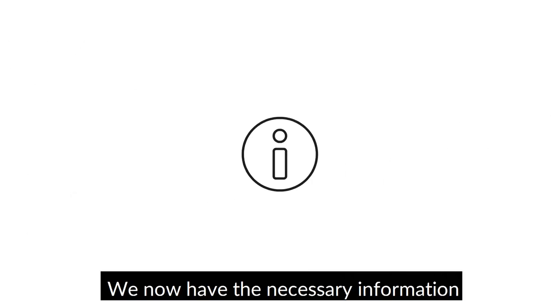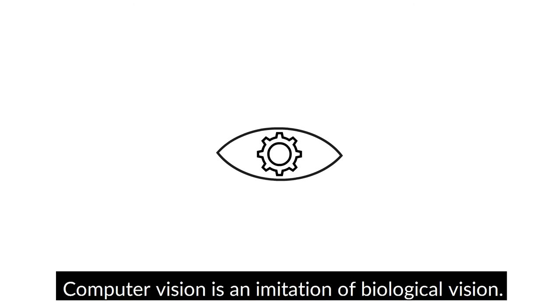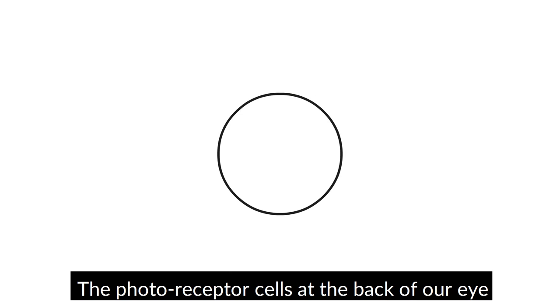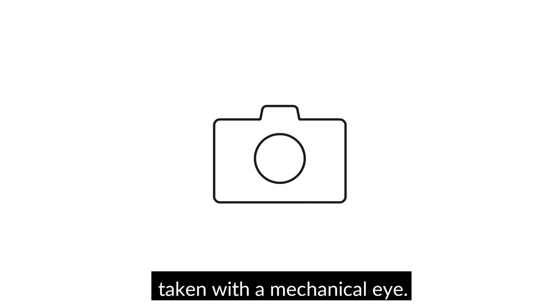We now have the necessary information to understand the basics of computer vision. Computer vision is an imitation of biological vision. The photoreceptor cells at the back of our eye are replaced by the pixels of a digital image taken with a mechanical eye.